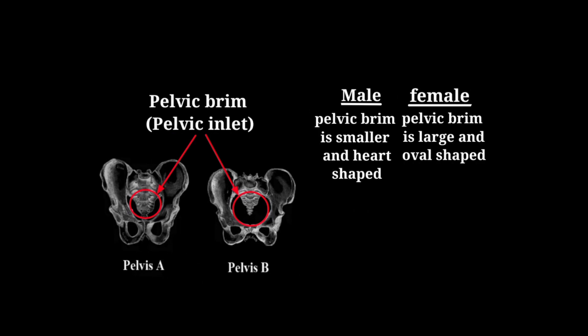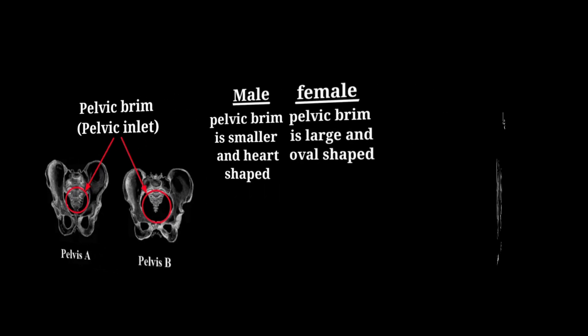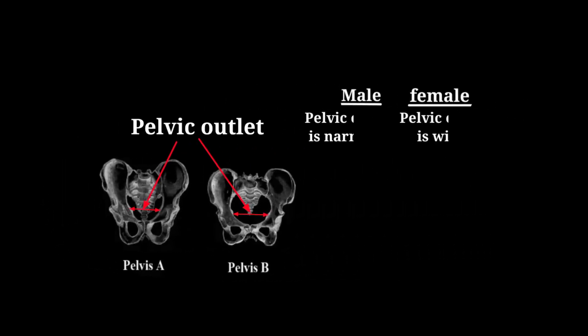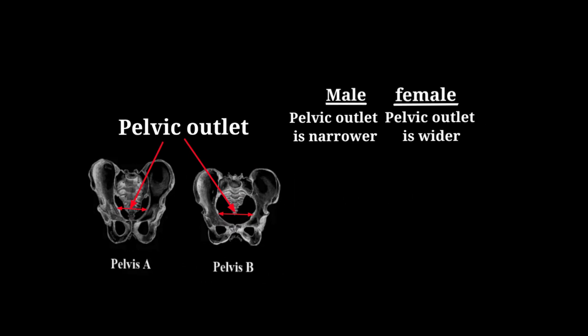In the female pelvis, the pelvic brim is large and oval shaped. Regarding the pelvic outlet, the pelvic outlet is narrower in the male pelvis and wider in the female pelvis.